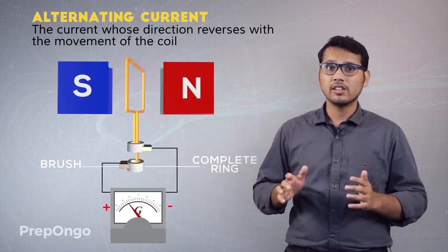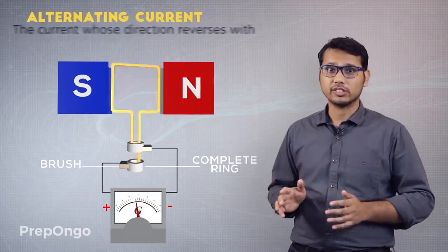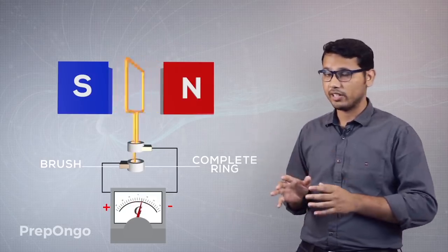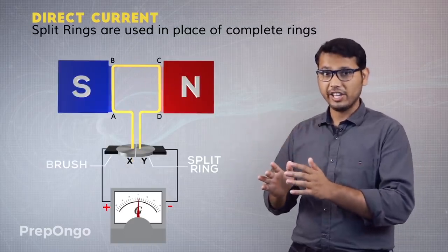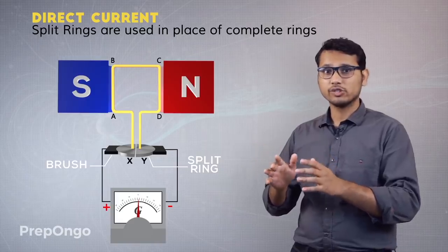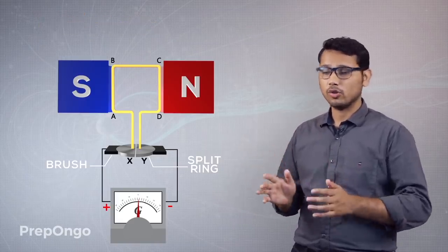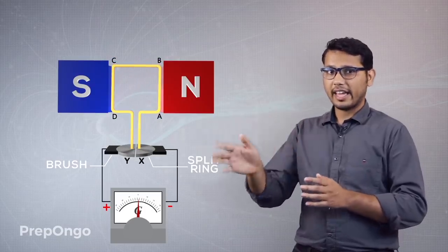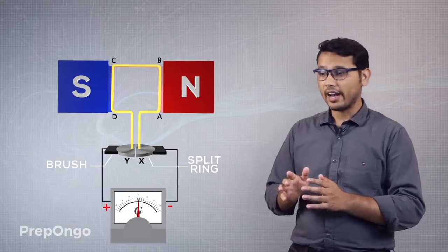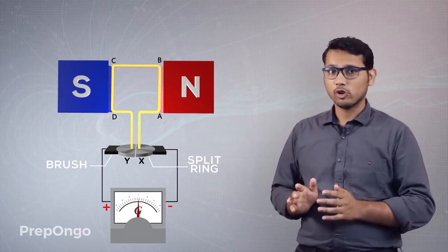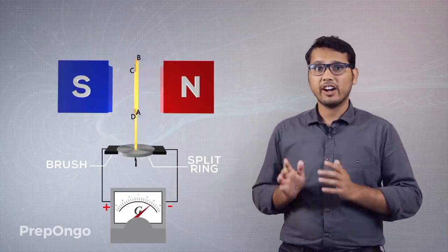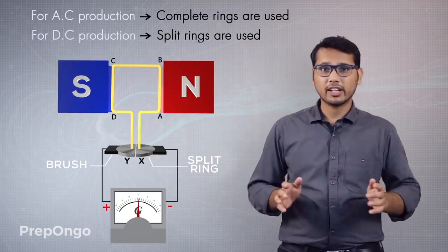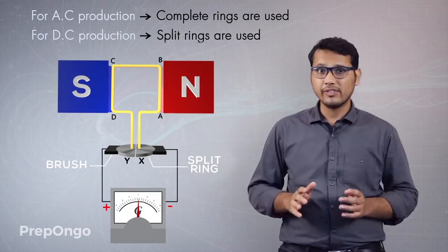This type of current which reverses its direction every half rotation is known as alternating current — the same current we use in most of our electrical appliances at home. If we need direct current or unidirectional current, we make certain changes: instead of complete rings, we use split rings — the same rings used in a motor — and we get direct current. So for alternating current we use complete rings, and for direct current we use split rings.